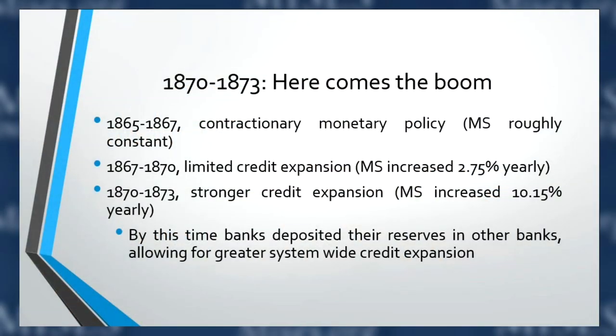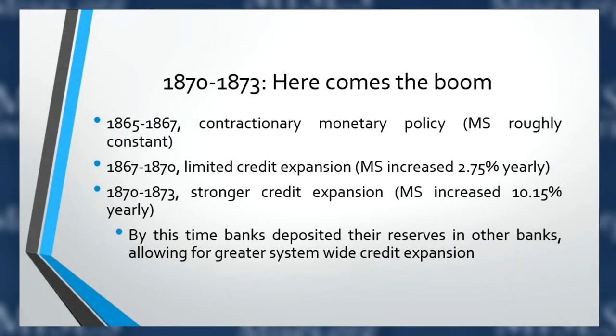John Sherman, when speaking about this bank bill in the Senate, claimed that if we'd had a national banking system before 1861, there would have been no Civil War — a bit of a stretch. After the Civil War, from 1870 to about 1873, there was much stronger credit expansion, as the national banking system matured and banks slowly pyramided their credit. This was the crucial year 1870, when enough banks did so. The money supply increased from about 3% yearly growth to about 10% — a significant increase in credit expansion.